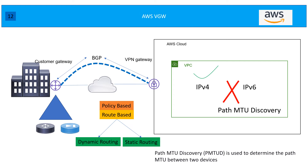Hey everyone, my name is Ajay and today we will talk about AWS Virtual Private Gateway, which is basically used for your VPN connection. When we talk about VPN connection, it is very similar to what we were doing on the legacy network, especially for Cisco or Juniper — there is no such difference in terms of functionality when you connect to cloud. Let's try to understand what components are involved when we build our VPN connectivity to the cloud.